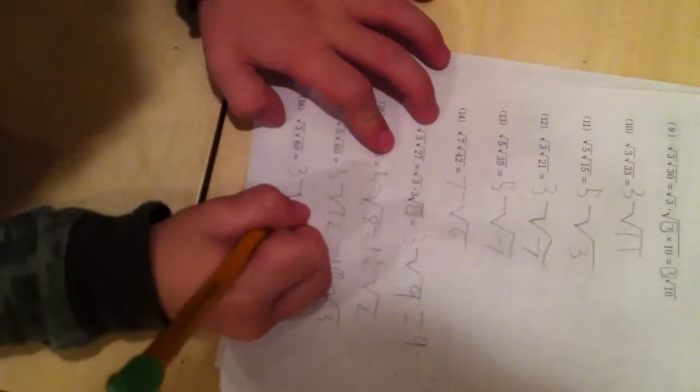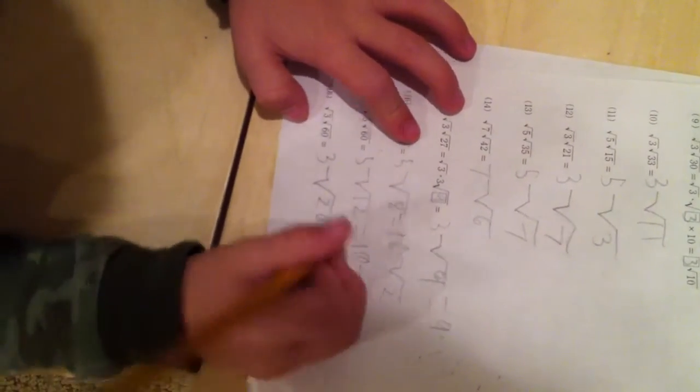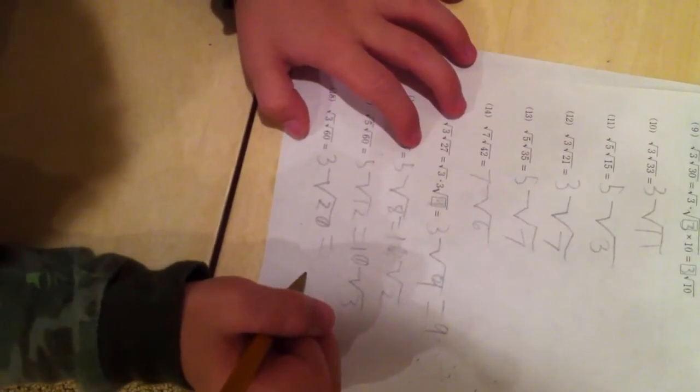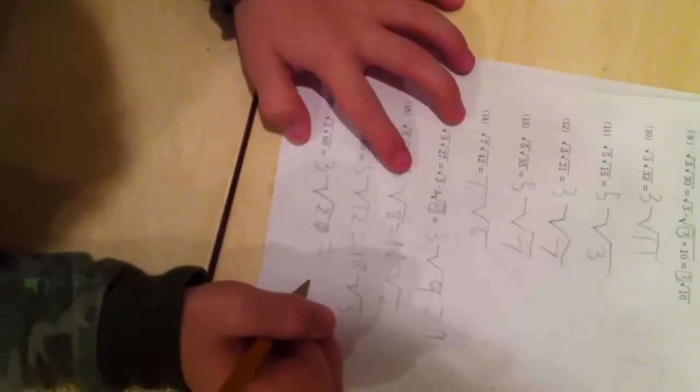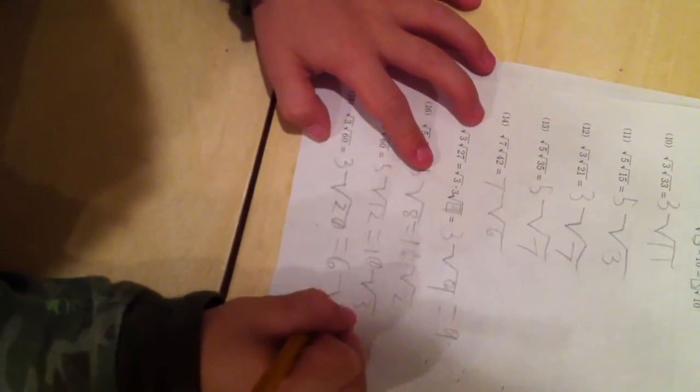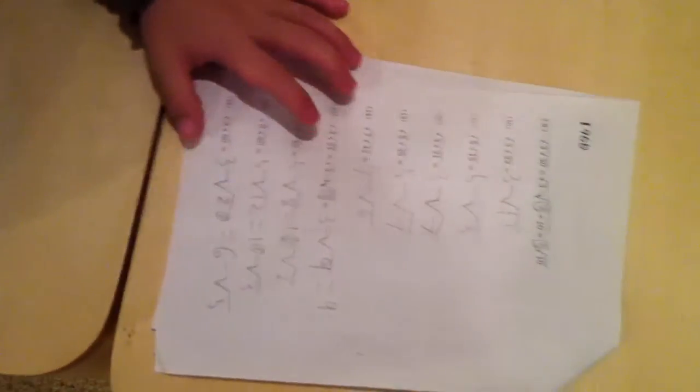10 times the square root of 10 equals, 5 times 4 is just 2 times the square root of 5, 6 times the square root of 5. Excellent, good job. Next piece. This part is just 3 times the square root of 5.